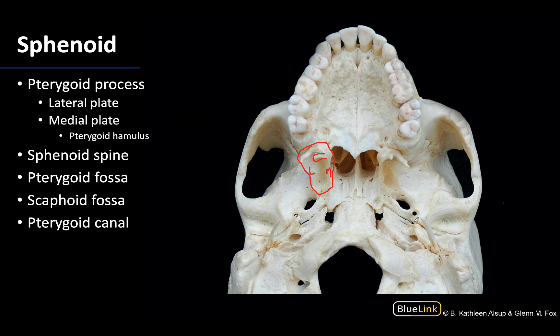Moving into this region, there is a small spine — the sphenoid spine — which is on a much smaller scale than those pterygoid plates. It is located near the foramen spinosum as well as the external opening of the carotid canal. Since there's a spine or projection here, something attaches there, which in this case is the sphenomandibular ligament.